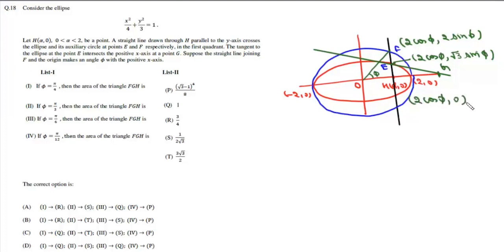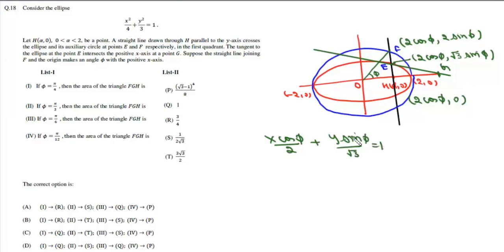The equation of the tangent at E is: x·cosφ/2 + y·sinφ/√3 = 1. To find point G on the x-axis, we put y = 0, giving the coordinates of G as (2/cosφ, 0).